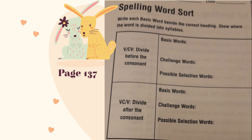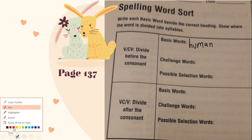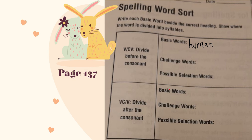Vowel, consonant, vowel — so that means you will write a word where you have this pattern. Let's write the word human. Pay attention. And I want you to write with red the period to separate the vowel-consonant-vowel pattern — human — right there, between the U and the M.